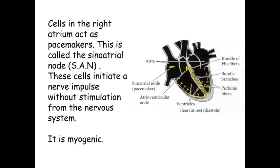The heart can create its own wave of excitation, which spreads across the atria. It does not need a nerve to tell it to undergo this wave of excitation. Nerves might cause the heart rate to increase or decrease, but the heart is its own pacemaker. The heart can initiate its own heartbeat without the aid of a nerve or a hormone. This means that the heart is myogenic and it creates its own nerve impulse.